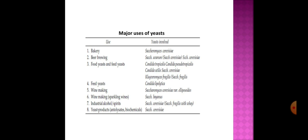Yeast are used in various food industries. In bakery, Saccharomyces cerevisiae is used; in beer industry, Saccharomyces cerevisiae and Saccharomyces uvarum are used. Candida tropicalis, Candida pseudotropicalis, Candida utilis, Saccharomyces cerevisiae, and Kluyveromyces fragilis are used in food and feed. Candida lipolytica is used as feed. For wine making, Saccharomyces cerevisiae var. ellipsoides is used, and sparkling wine is produced by Saccharomyces bayanus. Industrial alcohol is produced by Saccharomyces cerevisiae; if the medium is whey, Saccharomyces fragilis is used.